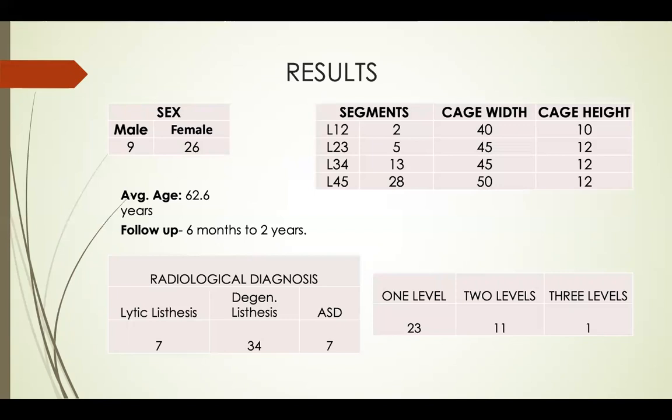For the results, we had 9 males and 26 female patients with an average age of 62.6 years and a follow-up ranging from 6 months to 2 years. We had 7 segments of lytic listhesis, 34 of degenerative listhesis, and 7 of adjacent segment disease.